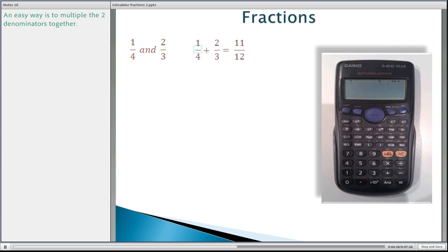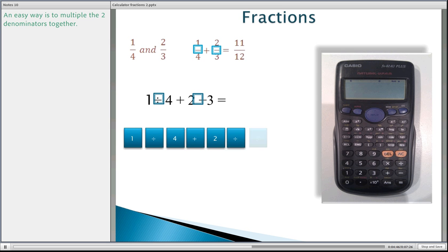Okay, so that symbol there means division. So actually saying one divided by four plus two divided by three equals. Now to put this in your calculator, we just go one divided by four plus two divided by three equals. And we'll either get eleven twelfths or you might get a decimal reading of 0.916667, depending how your calculator is set up.